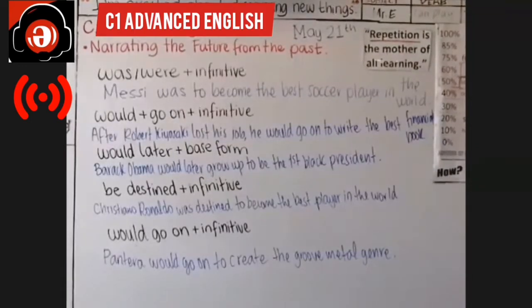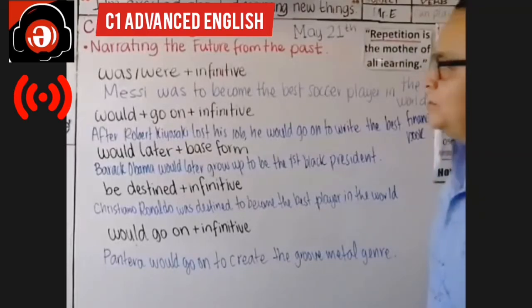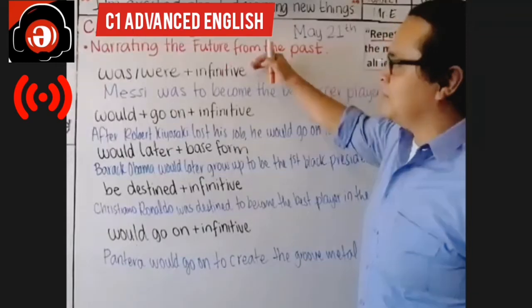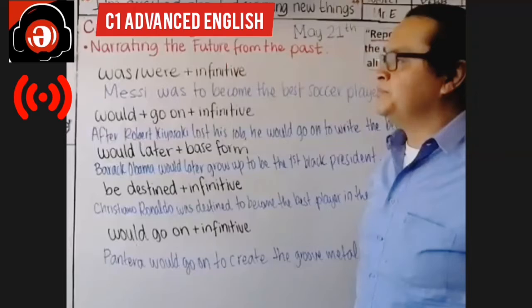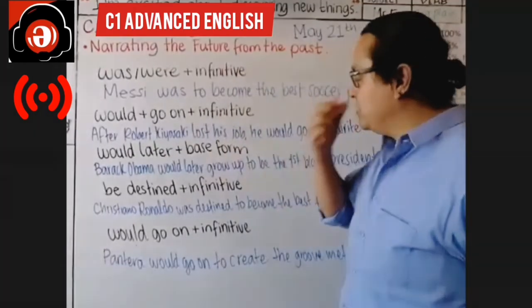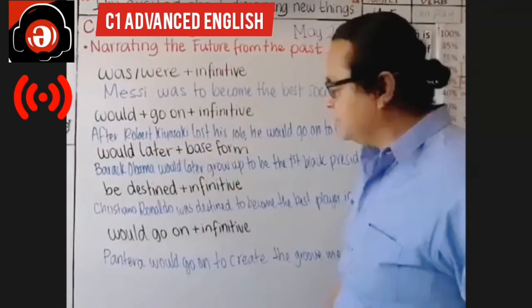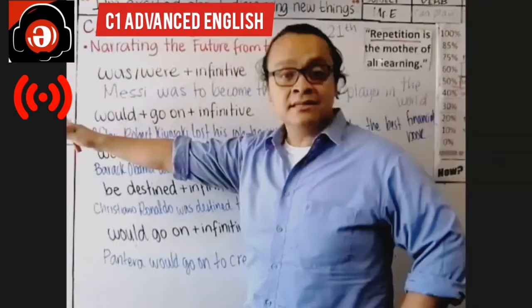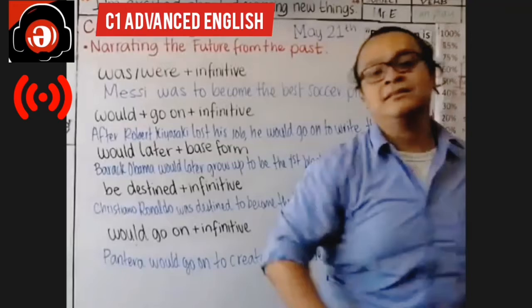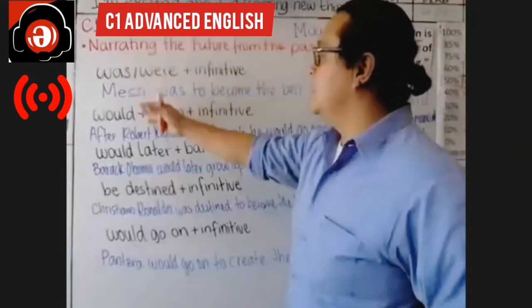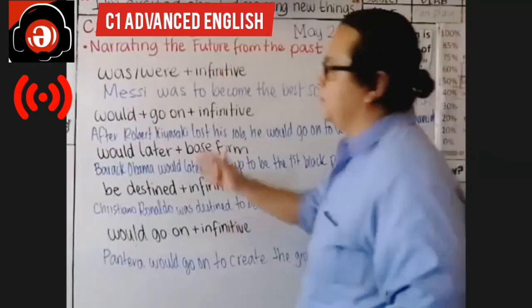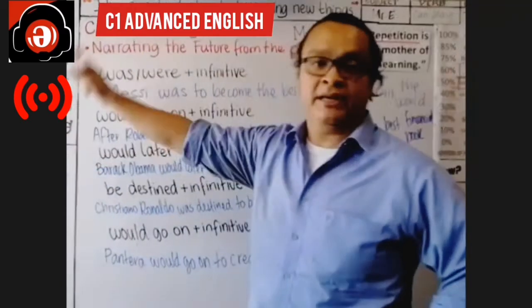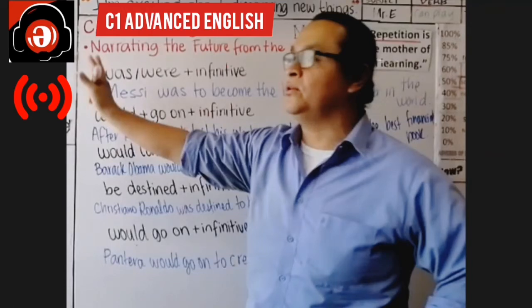We've got your examples on the board. We're talking about famous artists, musicians, and personalities — Messi, Robert Kiyosaki, Barack Obama, Cristiano Ronaldo, and Pantera the heavy metal band. We're narrating the future from the past. For instance: Messi was to become the best soccer player in the world — he started at age three or four, and he was to become the best soccer player in the world.